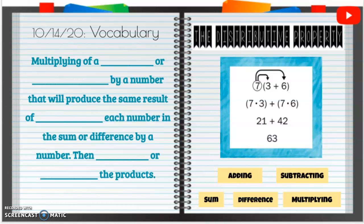October 14th, 2020 vocabulary — we have the distributive property. Over on the left hand side is going to be our definition of the distributive property, and on the right hand side is an example or a picture of what the distributive property is looking like.